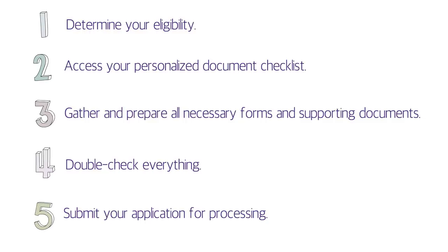Step five: submit your application for processing. There are two different addresses — one in Sydney, Nova Scotia for outland applicants, and one in Mississauga, Ontario for inland applicants. The complete application package — a large bundle of documents — must be sent to the appropriate location. This will be followed by the medical examination of the spouse and children, and biometrics as well. After submission, expect a wait of six to twelve months.